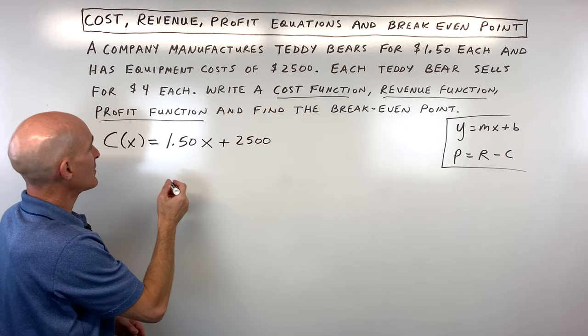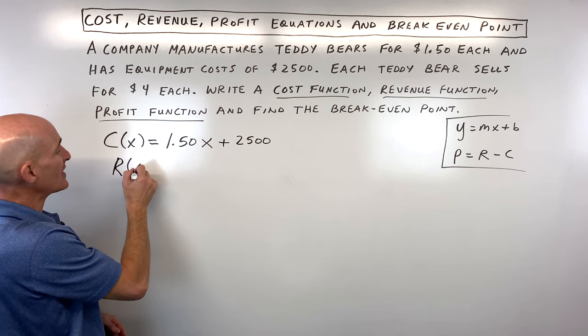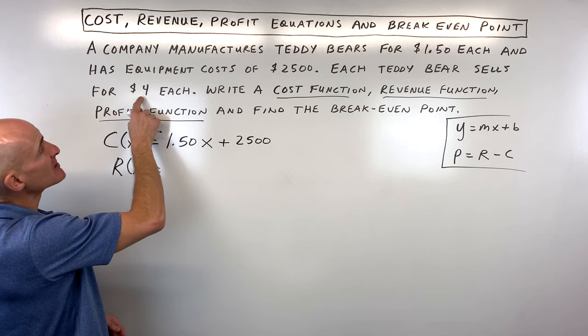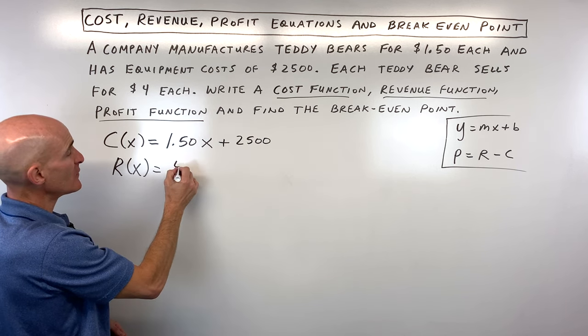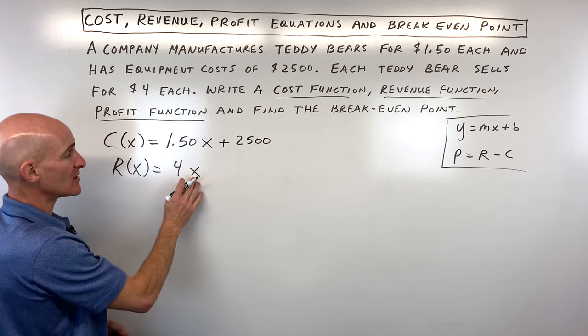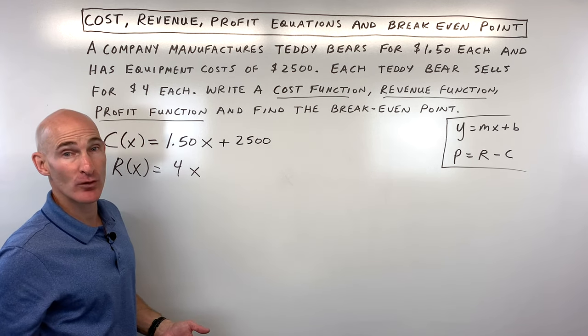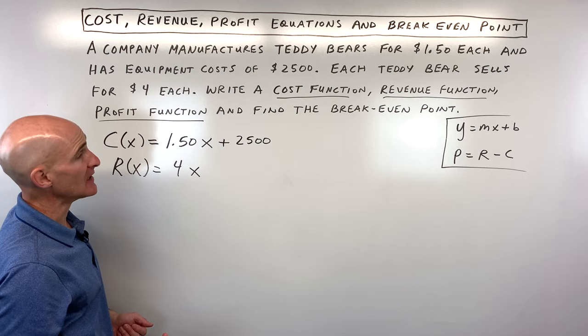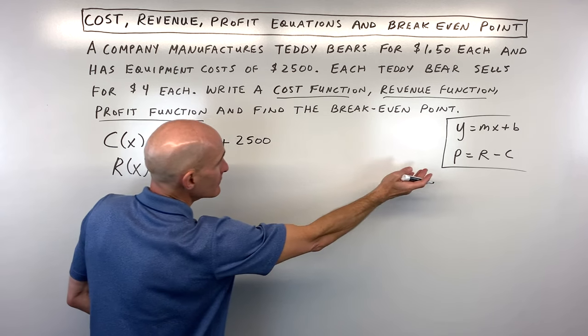Now, the revenue function, that's how much money that you're making when you sell these teddy bears. And they're saying that we sell them for $4 each. So it's going to be $4 times the number of teddy bears that you sell. If you sell 10, it's going to be 4 times 10, $40 that you're taking in.